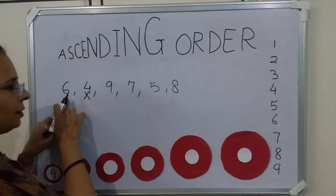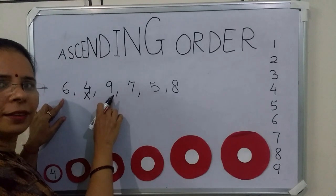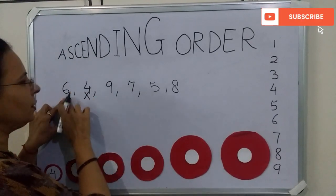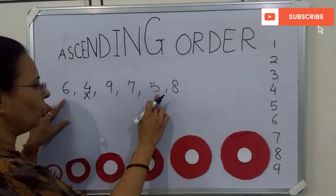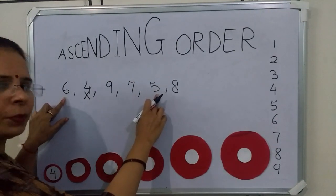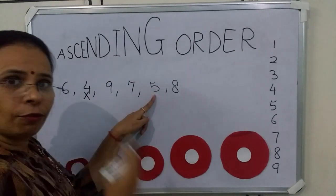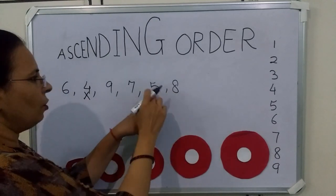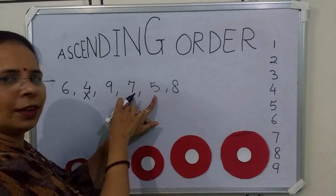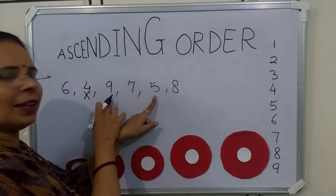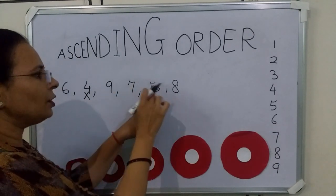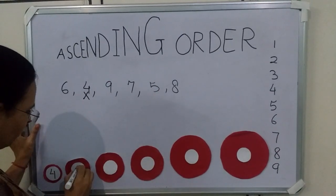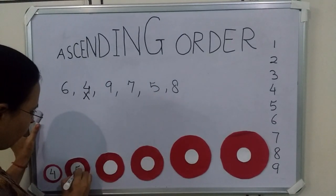The first number is 6. Is 6 smaller than 9? Yes. Is 6 smaller than 7? Yes. Is 6 smaller than 5? No, so we will skip 6. Now we have to see 5. Is 5 smaller than 8? Yes. Is 5 smaller than 7? Yes. Is 5 smaller than 9? Yes. It means 5 is the smallest number, so we will write 5.